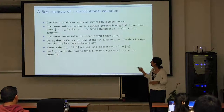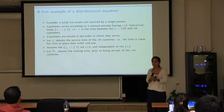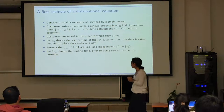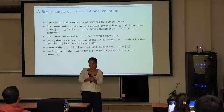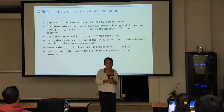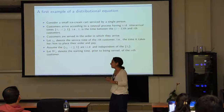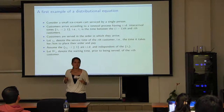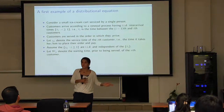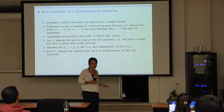I'll begin by giving you one of the first examples of a distributional equation you can think of. I actually have a degree not in math, but in applied and management science and engineering. I've been a probabilist all my life, but technically I'm an engineer. Applied probability in the U.S. usually means doing probability in an engineering school means queuing theory. So let me motivate everything with a queuing example.